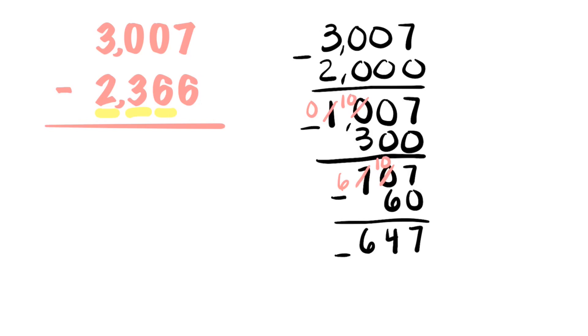Now we have to subtract just the ones, which is 6. 7 take away 6 is 1. 4 take away nothing is 4, and 6 take away nothing is 6. 641 is the difference.